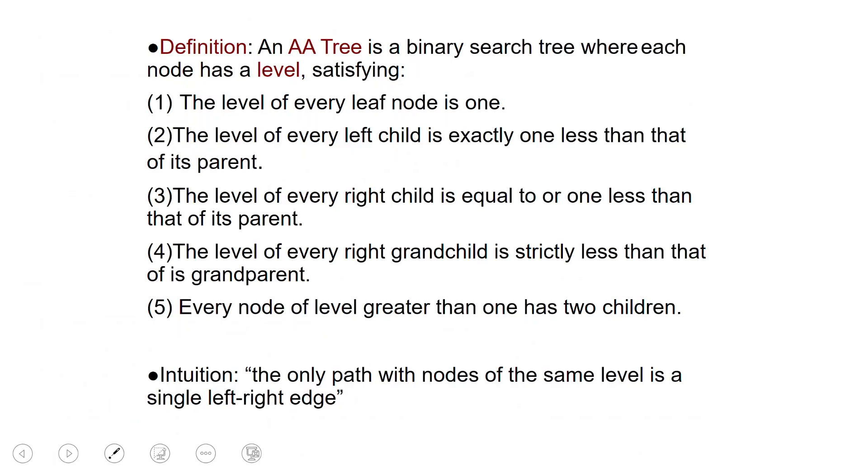The definition of AA tree is written here. There is a bunch of conditions. The intuition however is fairly straightforward. The intuition is that the only path with nodes of the same level is a single left right edge. In other words, you always have to change level when you go from a parent to a child with the only possible exception of a single left right edge. Let me go back to the pictures.